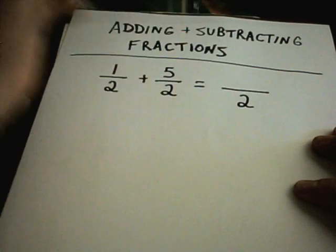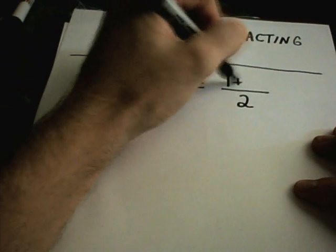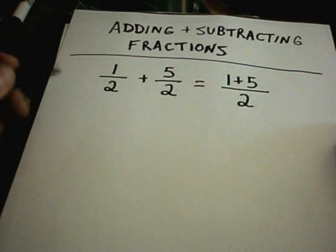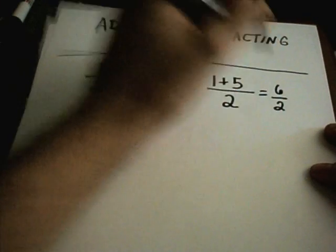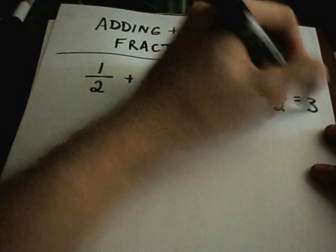When you have common denominators, the arithmetic occurs in the numerator. In this case, I'll get 1 plus 5, which is 6 over 2, and 6 divided by 2 is 3.